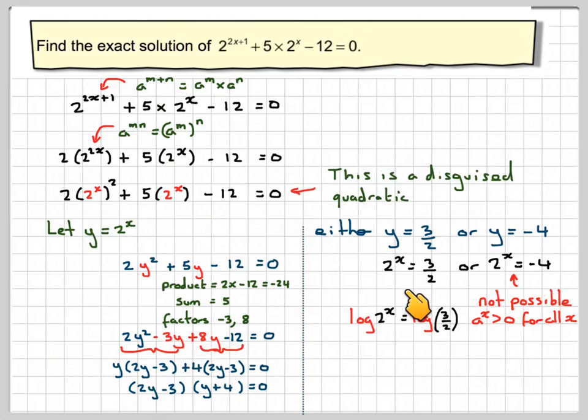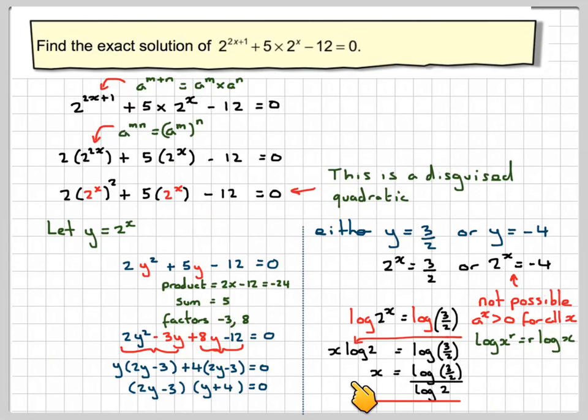Therefore, we solve this by taking logs of both sides. So we've got log 2 to the x is equal to log 3 over 2. We can take the x here and bring it down in front. So we've got x log 2 is equal to log 3 over 2 using log x to the r is equal to r log x. The final step will be to take this log 2 over the other side. So x is equal to log 3 over 2 divided by log 2, and that's the only solution to this.